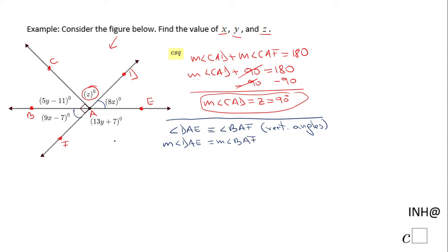So now we're going to go to the algebraic part. We're going to replace these angles with the expressions we see. DAE is 8x, and BAF is 9x minus 7. So we end up with an equation that we need to solve. I'm going to subtract 9x from both sides. 8x minus 9x is negative x equals negative 7. So x will be positive 7. You multiply by negative 1 both sides and get x equals 7.